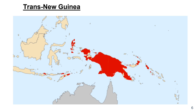Trans New Guinea is basically the Southeast Asia that is not Austronesian — it's the other parts of Indonesia right there, and you can tell where the hearth is for that.